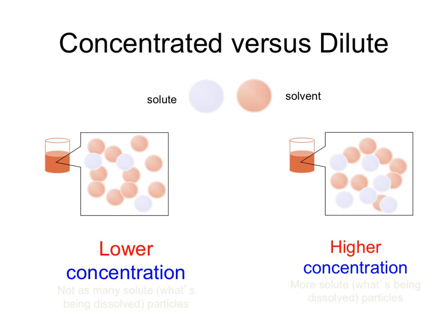This diagram shows the difference between a lower concentration and a higher concentration solution. On the left, the lower concentration solution has only three solute particles per solvent, whereas on the right, the higher concentration has six solute particles per solvent. Thus, there is a greater amount of solute per solution on the right at the higher concentration.